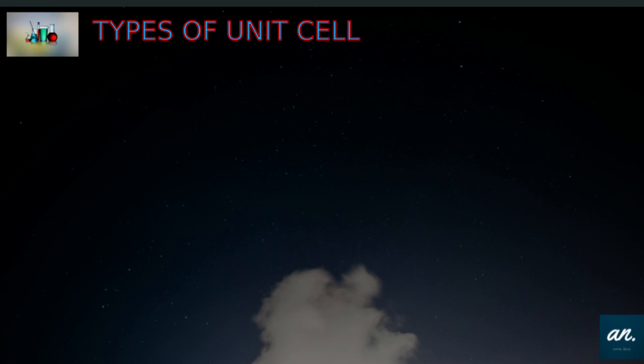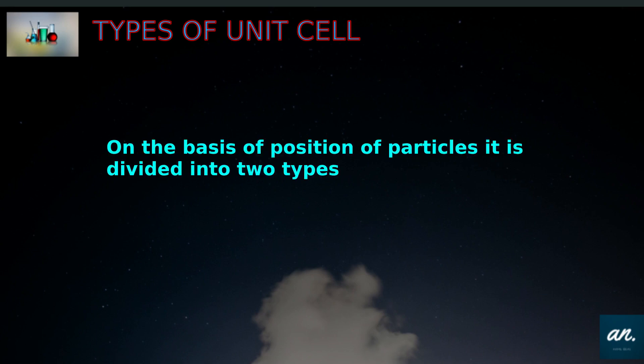On the basis of position of particles, unit cells are divided into two types. They are: first, primitive unit cell or simple unit cell; and second, centered unit cell.